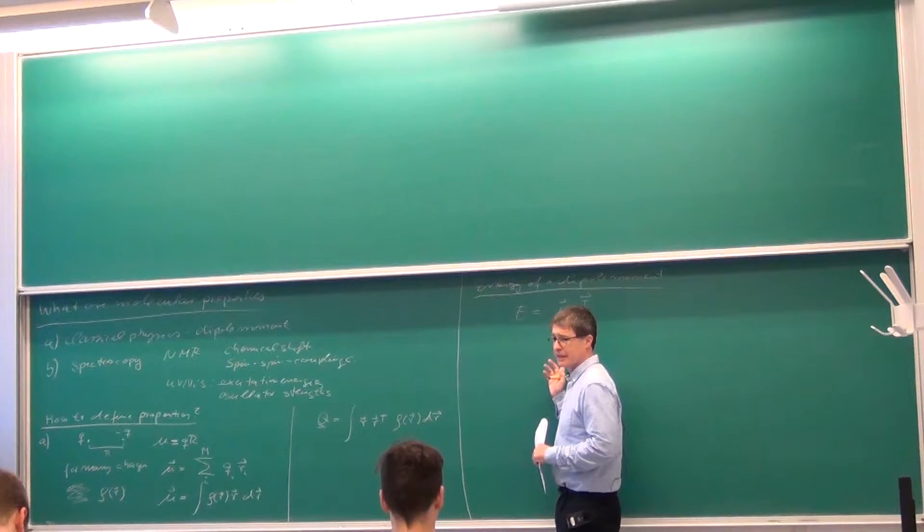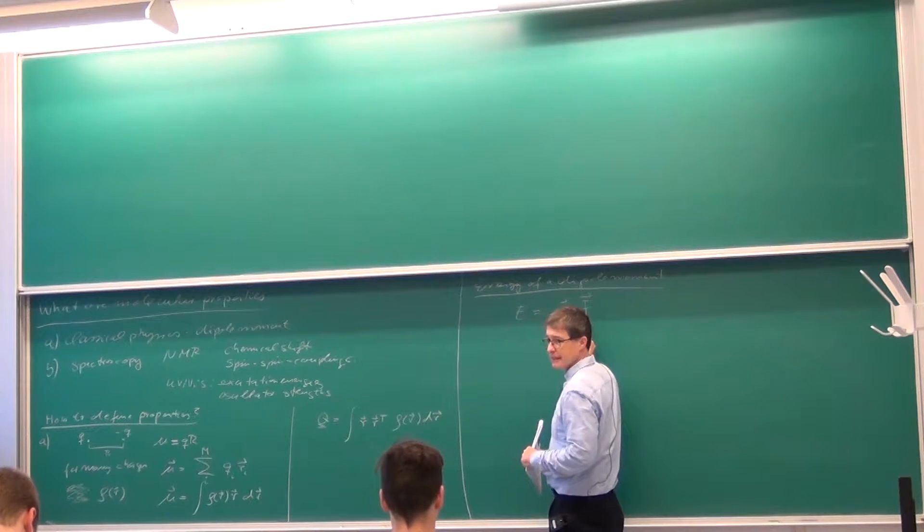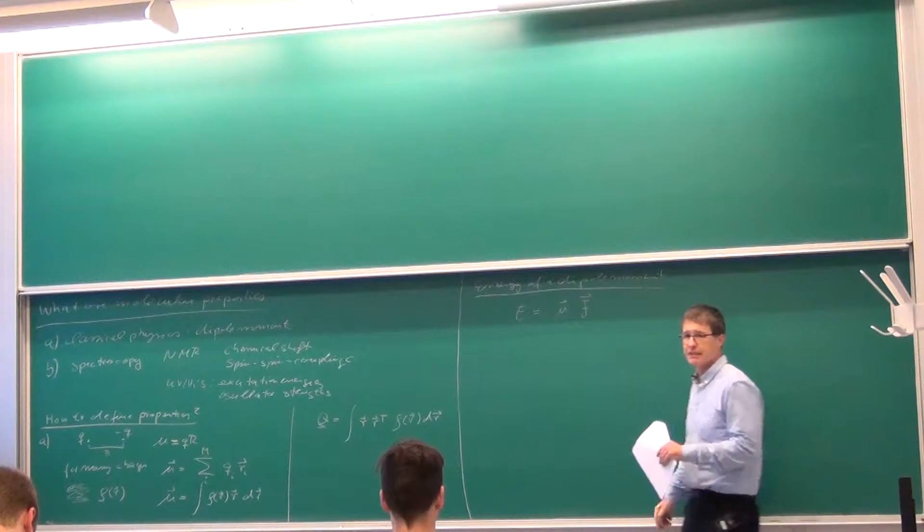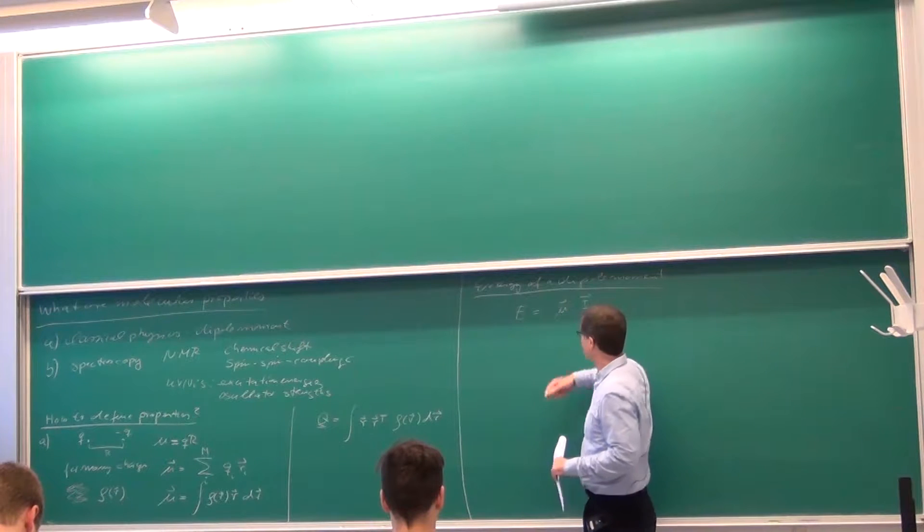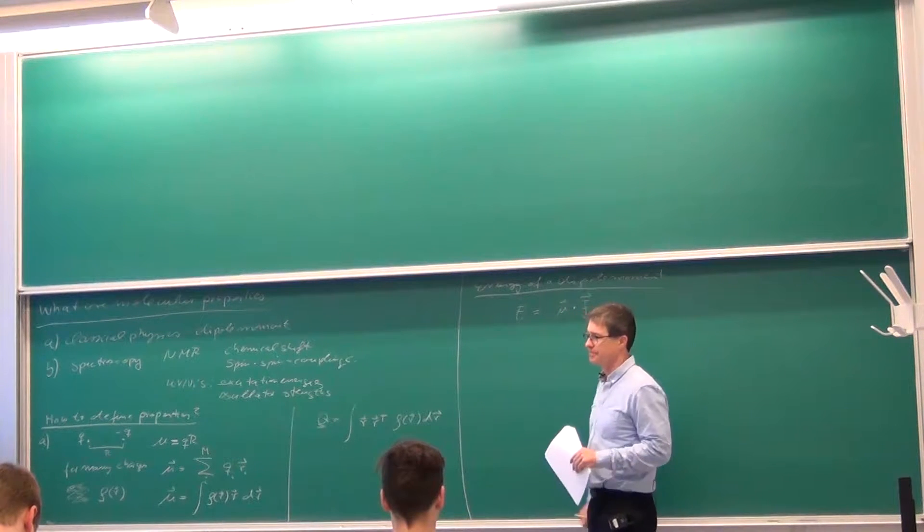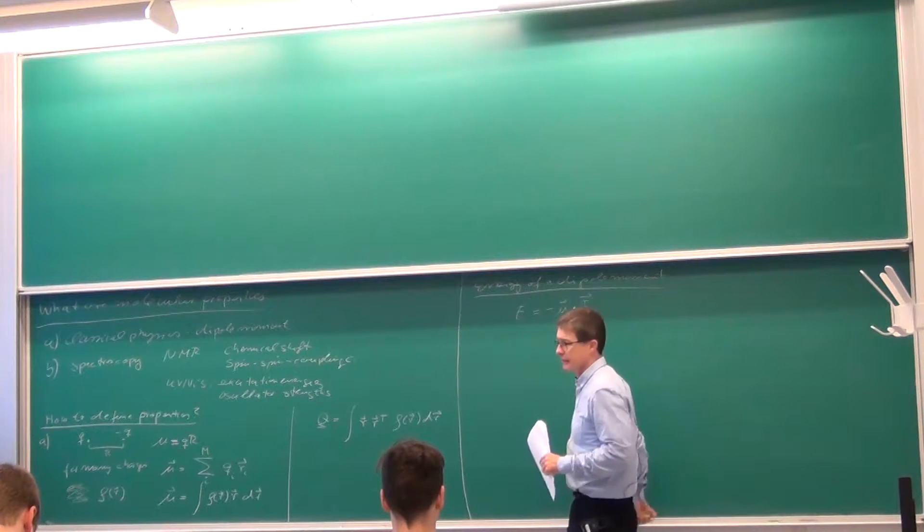Looking at the kind of quantities we have here: a field is a vector, a dipole moment is a vector, energy is definitely a scalar, so we have to have a scalar product of the two, and it's minus.